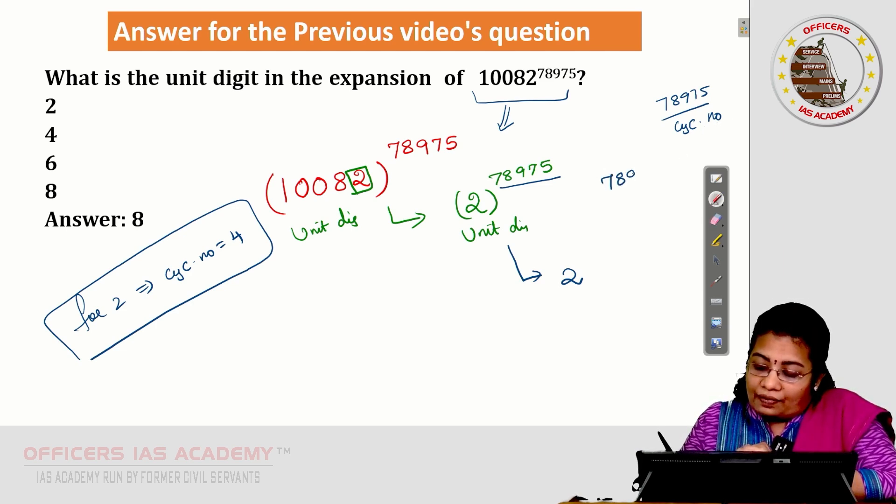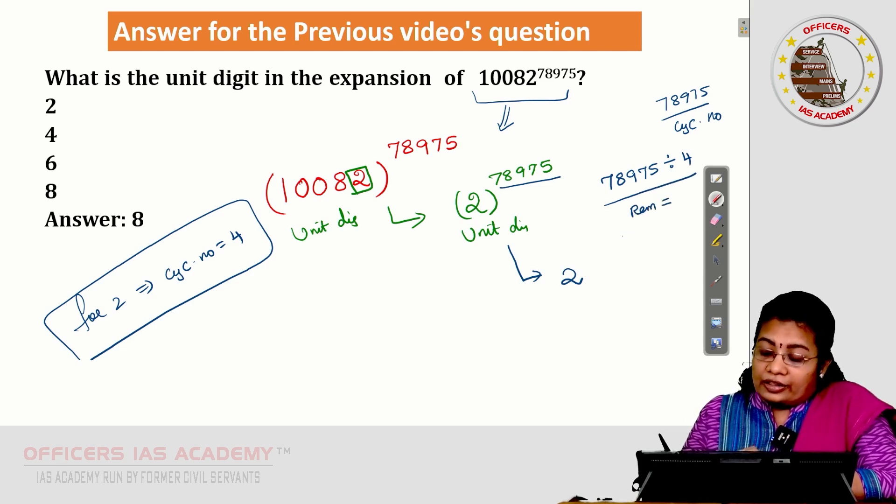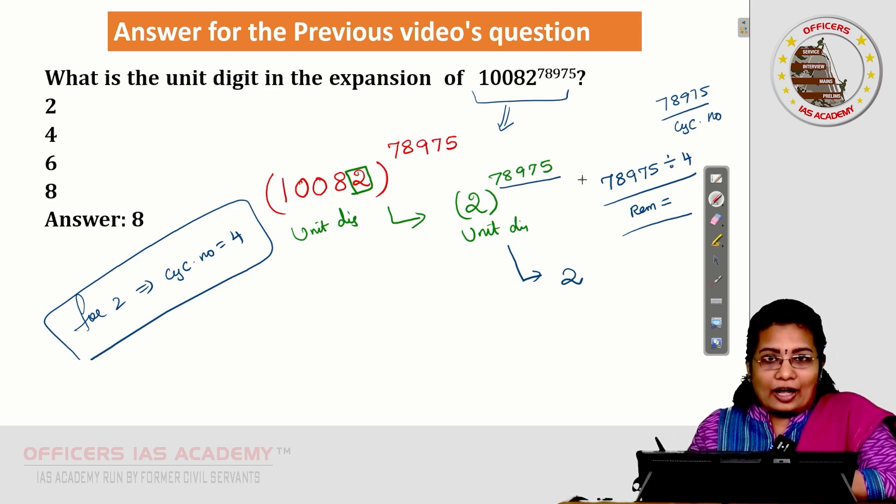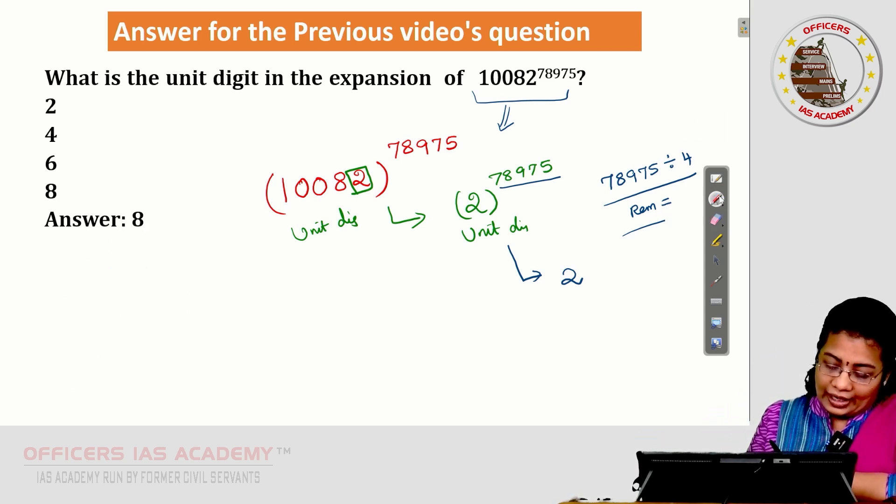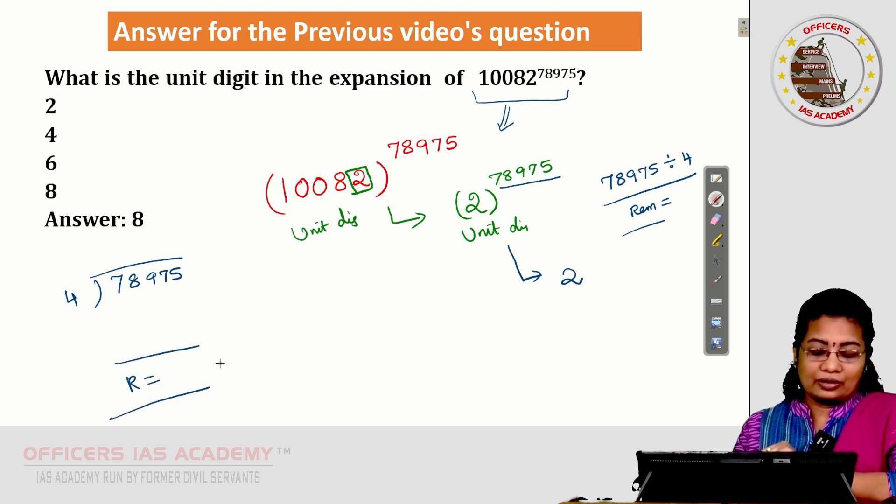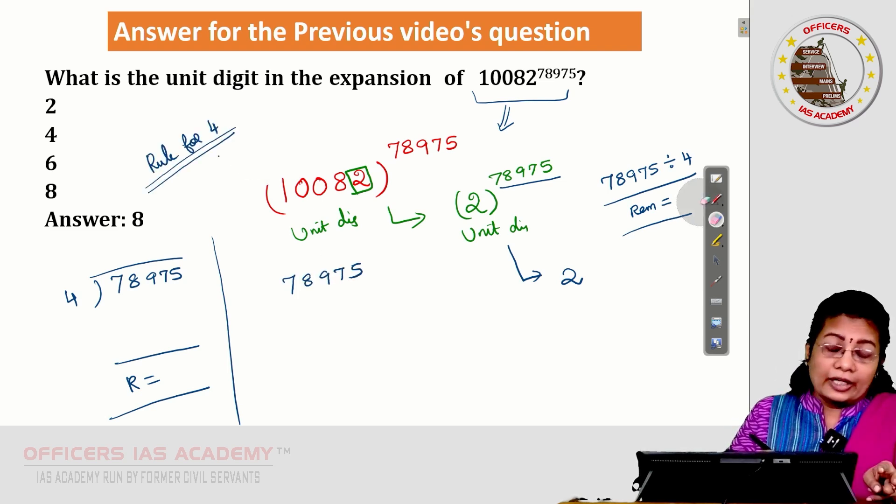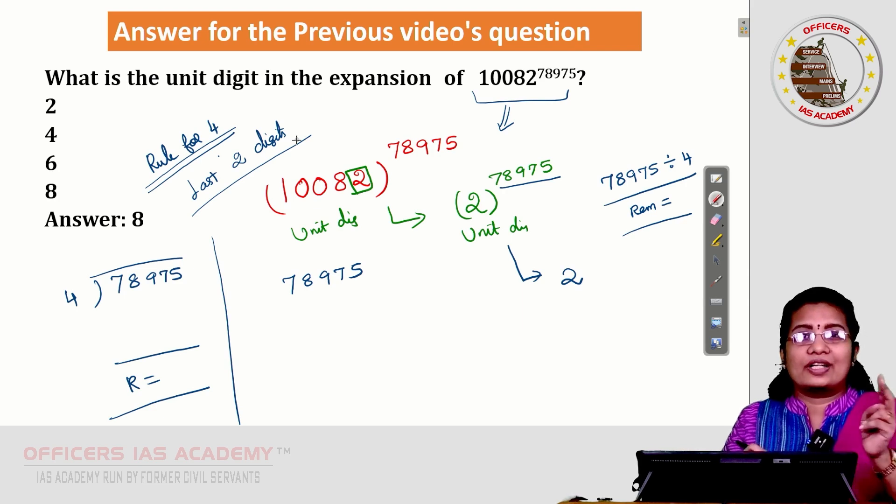78,975 to be divided by 4. I need to get the remainder in this case. After this, the remainder part is to be substituted with the power. 78,975 divided by 4. You can do the normal division and get the remainder. What smart students will do is, what is the test of divisibility rule for 4? The test of divisibility rule for 4 tells us, the last 2 digits can be checked.